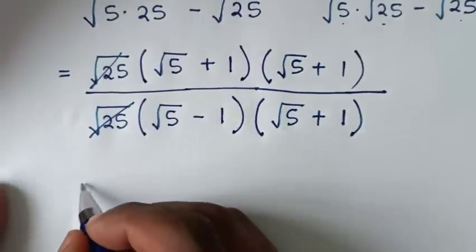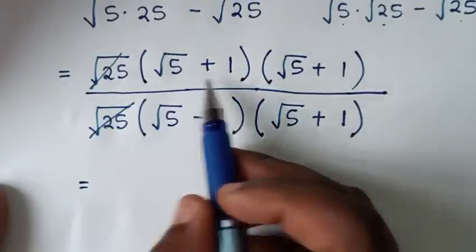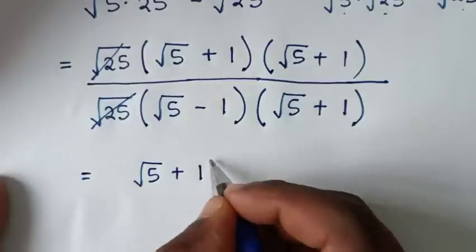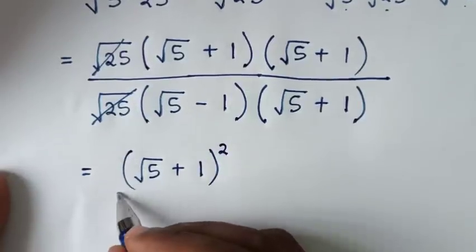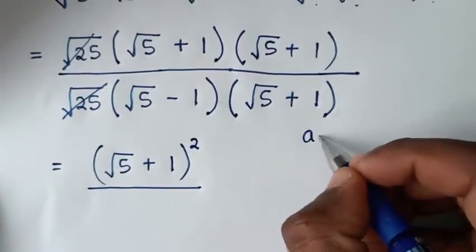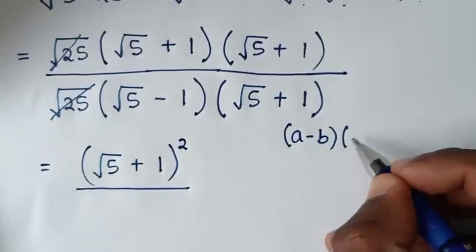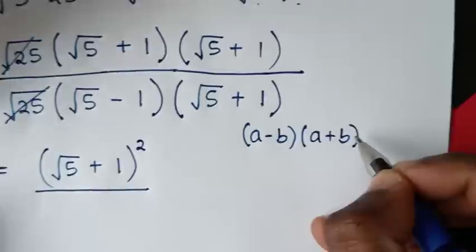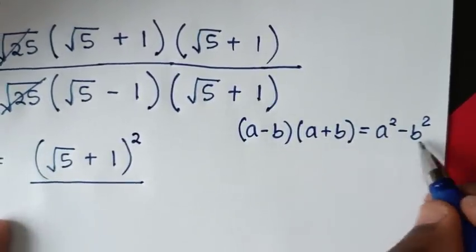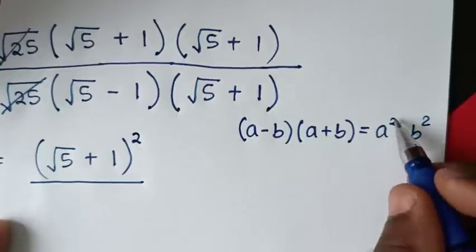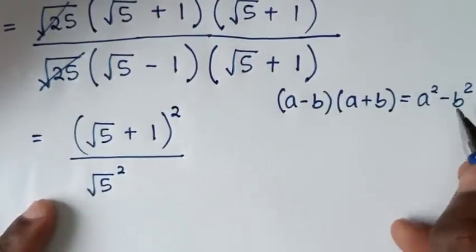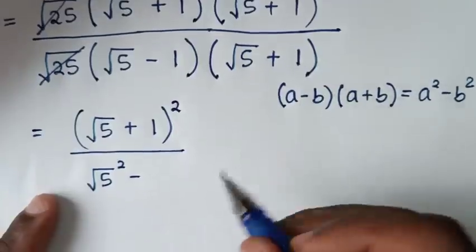In the next step, the numerator becomes (square root of 5 plus 1) squared. The denominator is in the form (A minus B)(A plus B), which equals A squared minus B squared, so it becomes square root of 5 squared minus 1 squared.